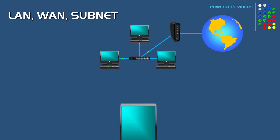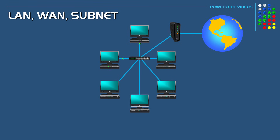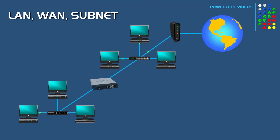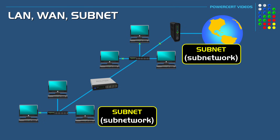Now a lot of times in businesses they may have different departments. For example, they may have a service department and a sales department. A business may want to separate the computer network data in different departments from each other so that the sales department doesn't see any network traffic from the service department and vice versa. So a business will divide their one local area network into two smaller networks, called subnetworks. A shorter way to say subnetwork is subnet.